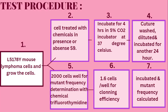Then two sections of 2000-cell wells are selected. In the first portion, 2000 cells are kept with the chemical trifluorothymidine and 1.6 wells are observed for cloning efficiency. Cells are again incubated and mutant frequencies are calculated to determine how much mutation has occurred.